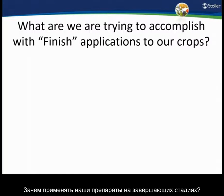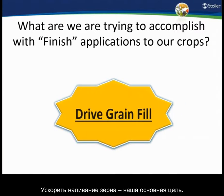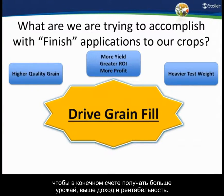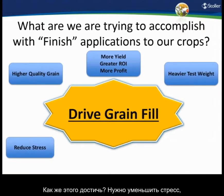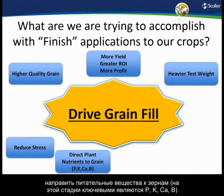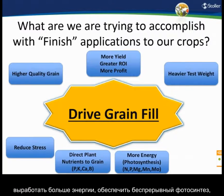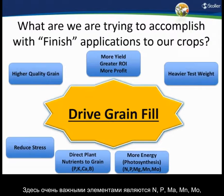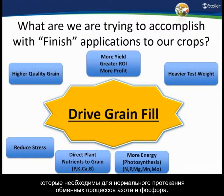So what are we trying to accomplish with finish applications? Drive grain fill — that's essentially it. While driving grain fill we're trying to have higher quality grain, a heavier test weight, greater return on investment, and more profit. To do that we reduce stress, direct plant nutrients to the grain — key nutrients at this time are phosphorus, potassium, calcium, and boron — and create more photosynthesis. Key players for photosynthesis are nitrogen, phosphorus, magnesium, manganese, and molybdenum to help with nitrogen and phosphorus metabolism within the plant.